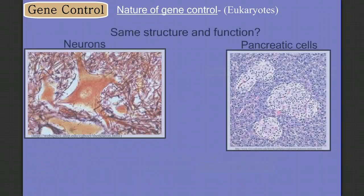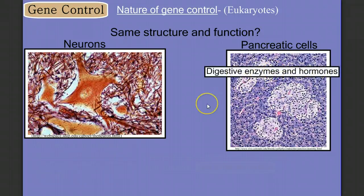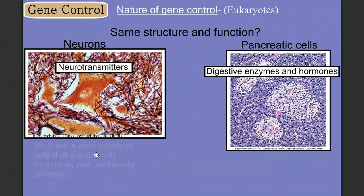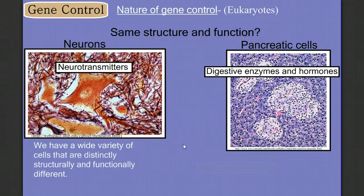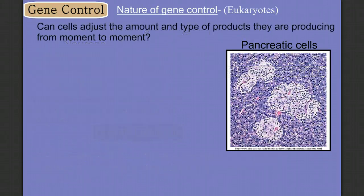Let's look at two types of cells. Here we have neurons — cells of the nervous system — and over here are very different-looking cells from the pancreas. Pancreatic cells produce many types of digestive enzymes and two hormones, insulin and glucagon, that help regulate blood sugar. Neurons produce neurotransmitters and send signals via electrical impulses. We clearly have a wide variety of cells that are distinctly structurally and functionally different. The process by which that ball of cells turns into these different cells is called cell differentiation.